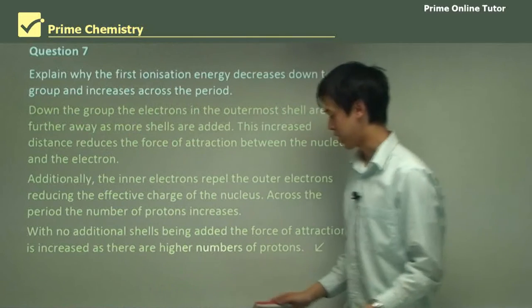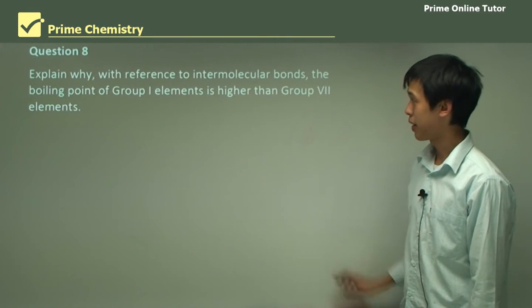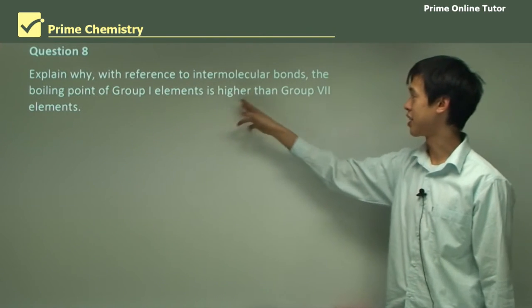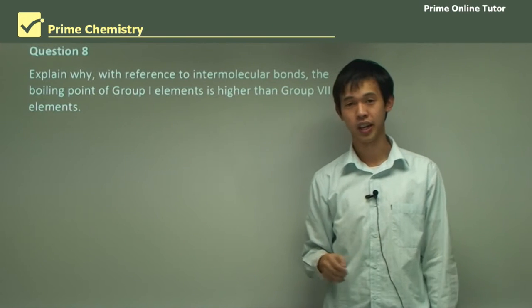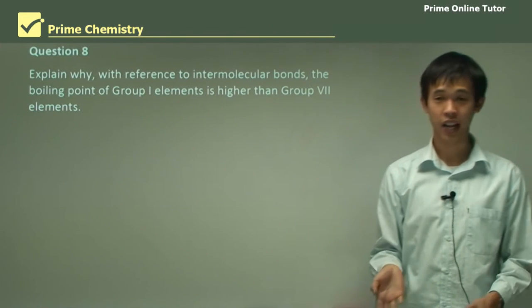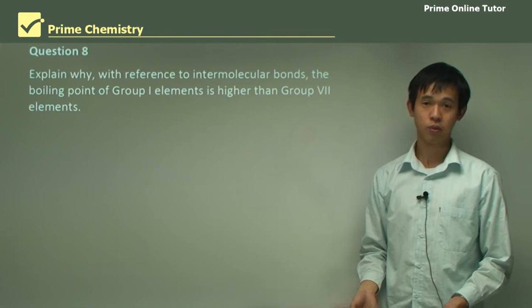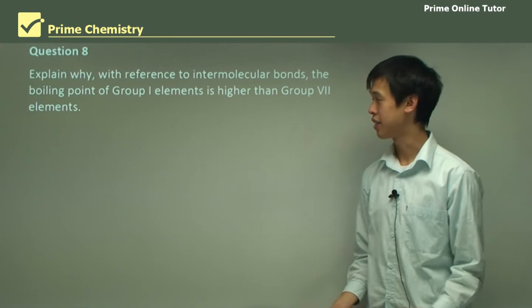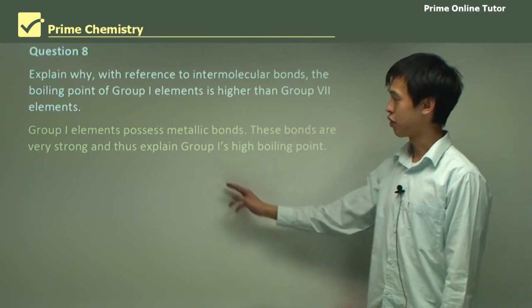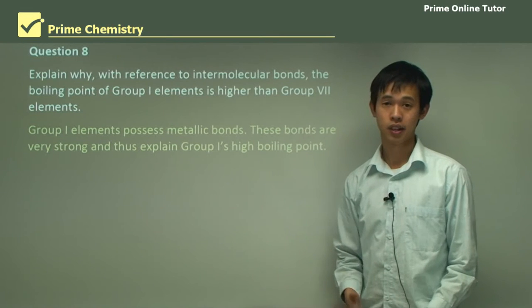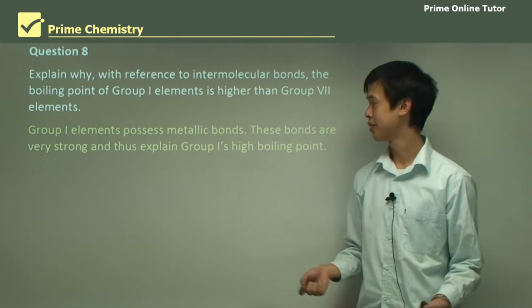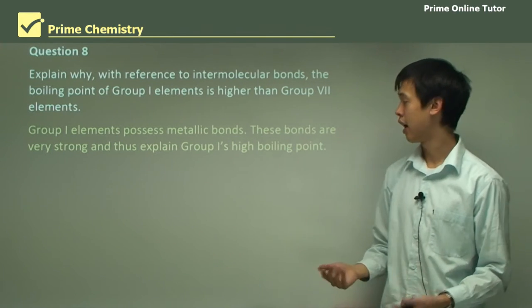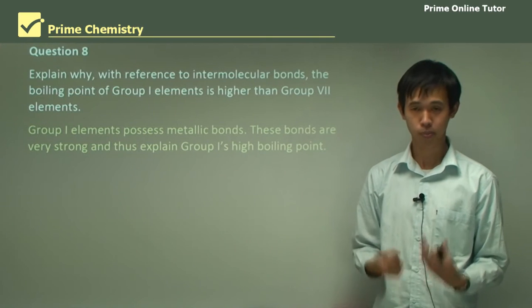Question 8: explain why, with reference to intermolecular bonds, the boiling point of group 1 elements is higher than group 7 elements. Why are the halogens gases when group 1 elements are metals? Group 1 elements possess metallic bonds — that should be obvious because we call them metals. These bonds are very strong, and so that explains group 1's high melting and boiling point.